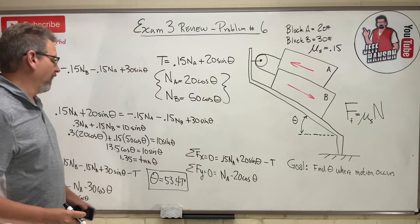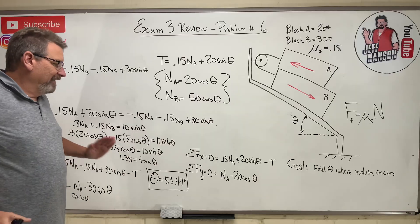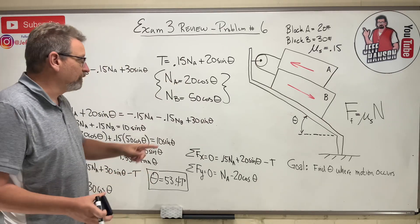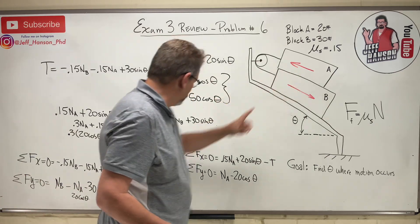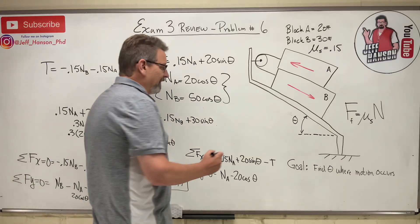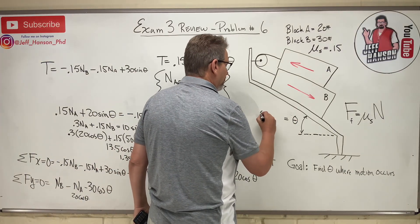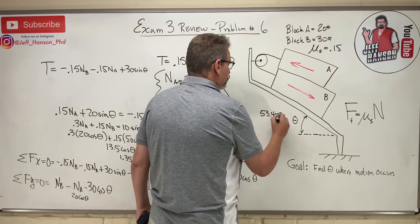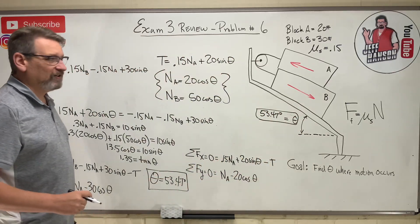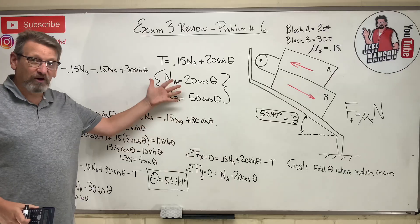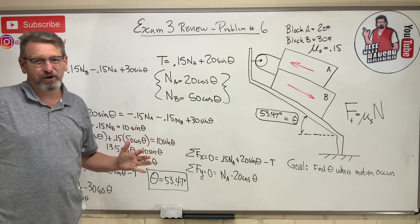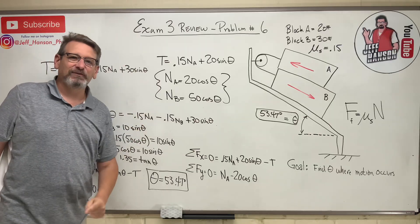All positive answers — everything looks good, which means we totally assumed the correct direction. If you assume the wrong direction you'll get a negative theta. But we assumed correctly, so theta equals 53.47 degrees — there it is! And it's all about those beautiful free body diagrams. You've got to be able to draw them — so important. All right gang, see you next video!